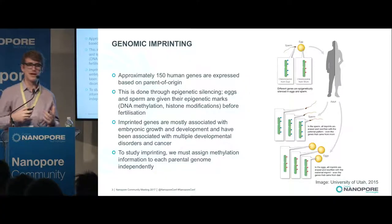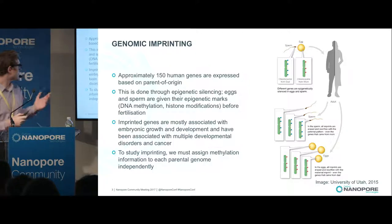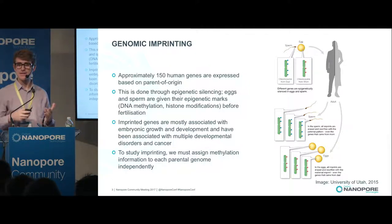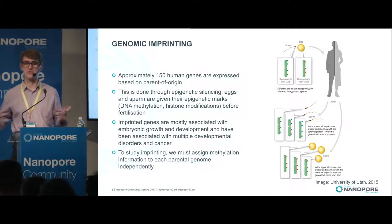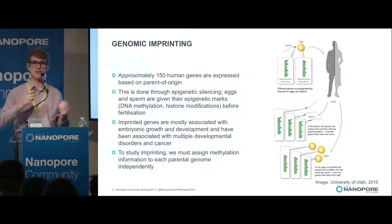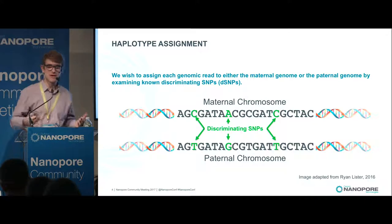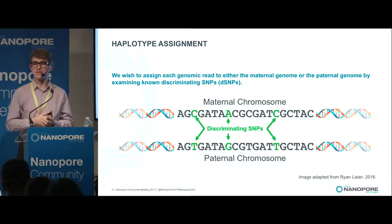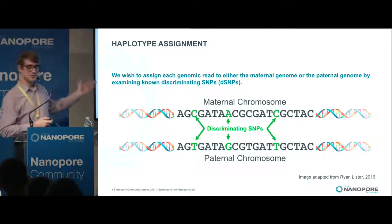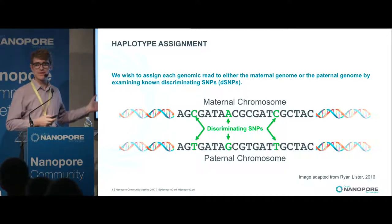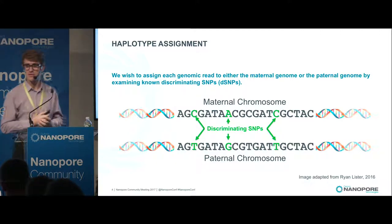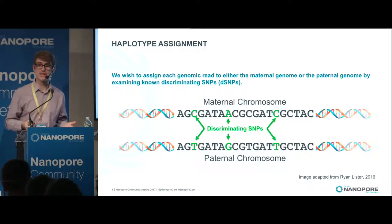We are looking into this in a mouse model. In order to study this, we need to separate which reads came from which chromosome and then look at the methylation states on those reads. This practice is called haplotyping — we separate our reads based on known discriminating SNPs, which in our case come from the Mouse Genome Project at the Sanger Institute on short read sequencing.